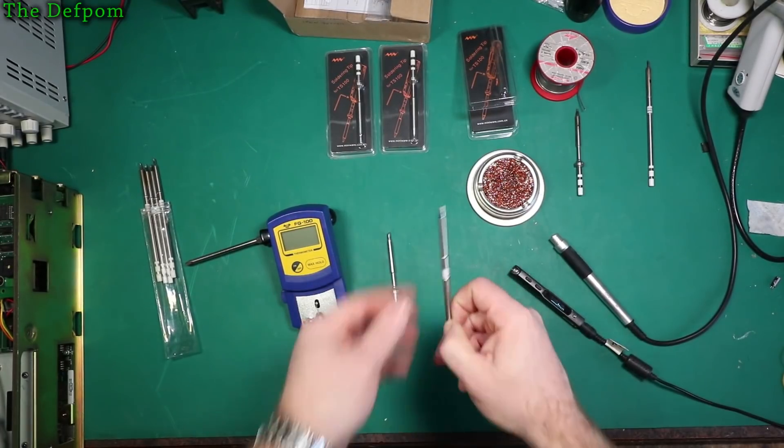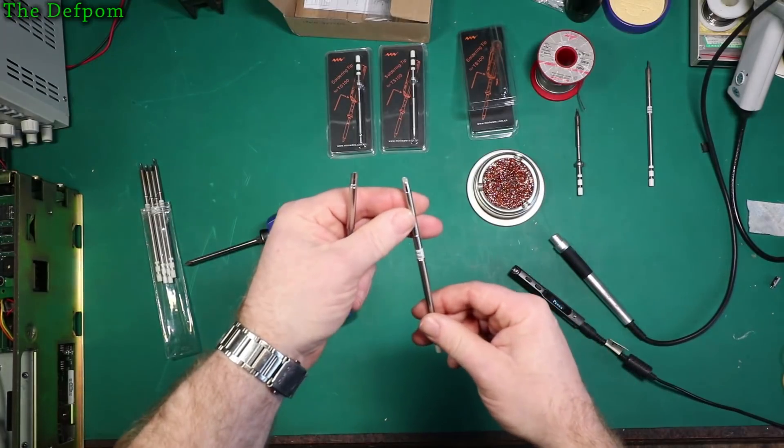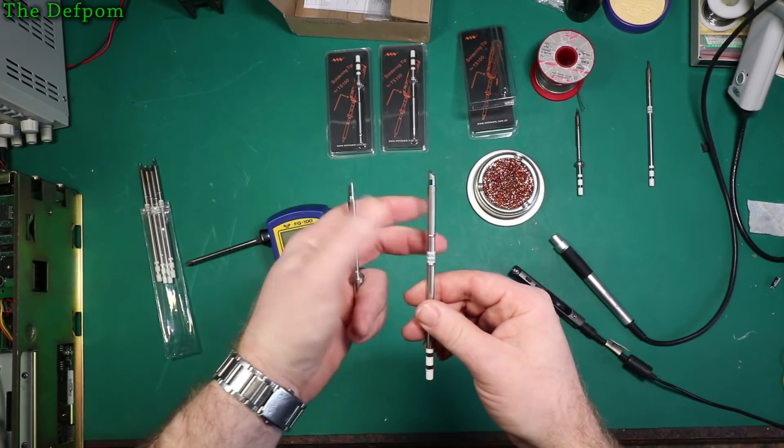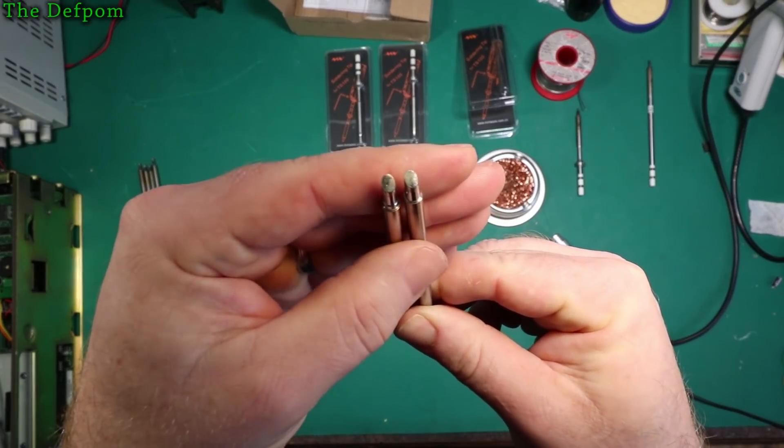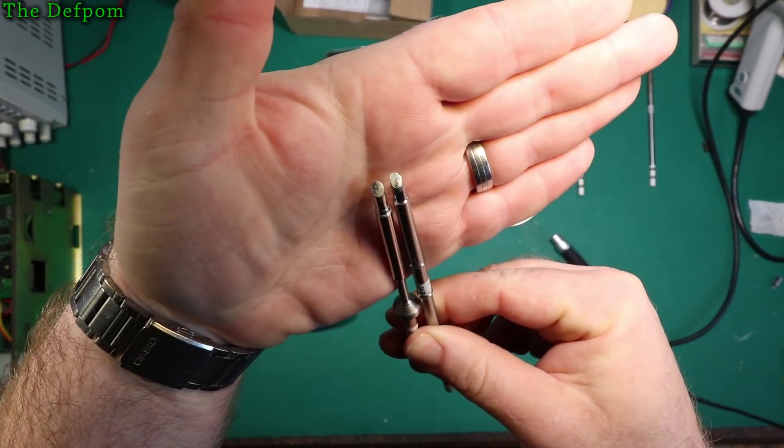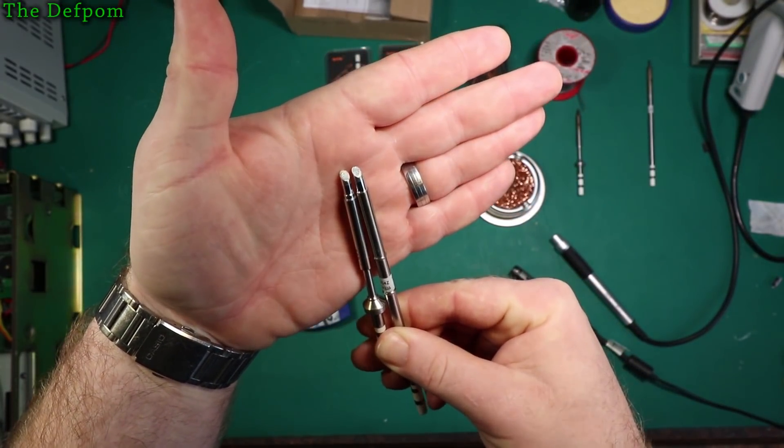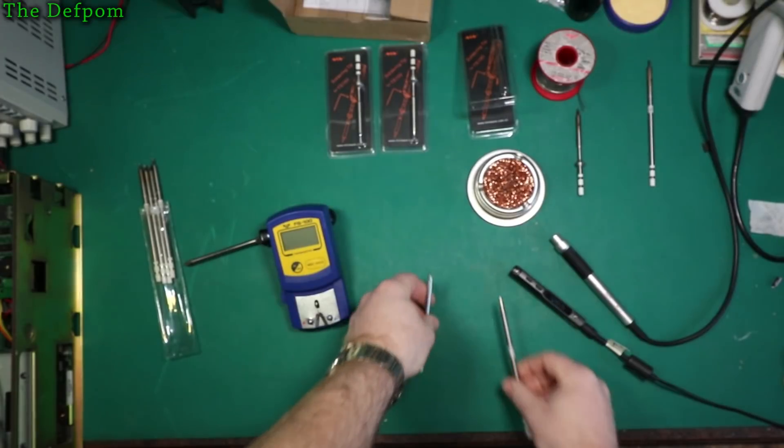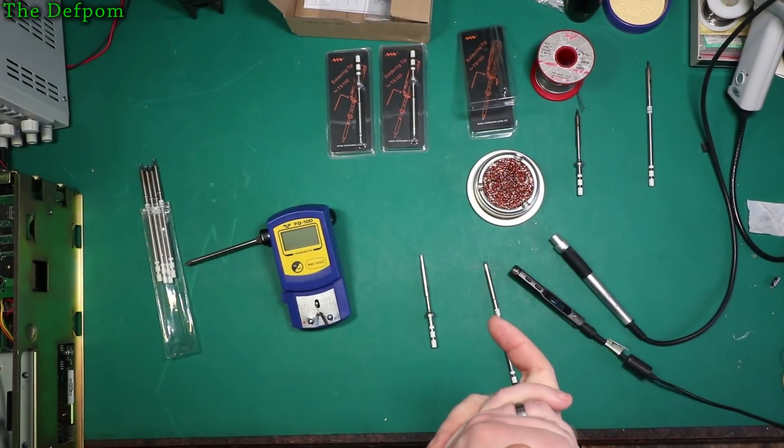What I've actually got here is a T12 tip for my fake Hakko FX951. It's a BC-4. If you look at the tips, they look very similar. Size-wise, they're basically identical. They're really, really similar. They're about as similar as I can get them. So I'm going to put these tips in and we're going to flick the things on. We'll see how they perform.